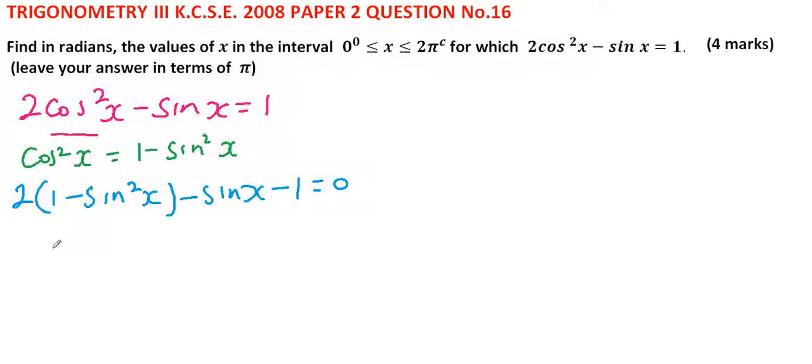When we rearrange this equation, we get 2sin²x + 2sinx - sinx - 1 = 0.